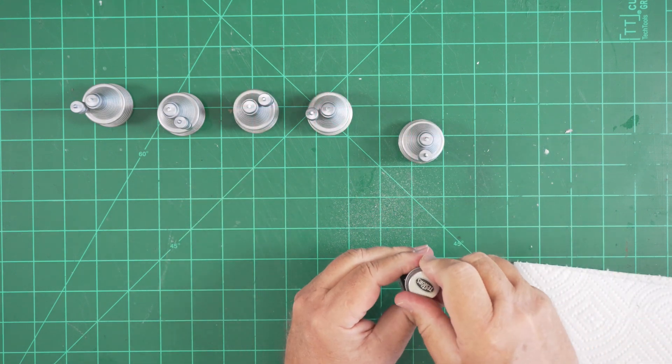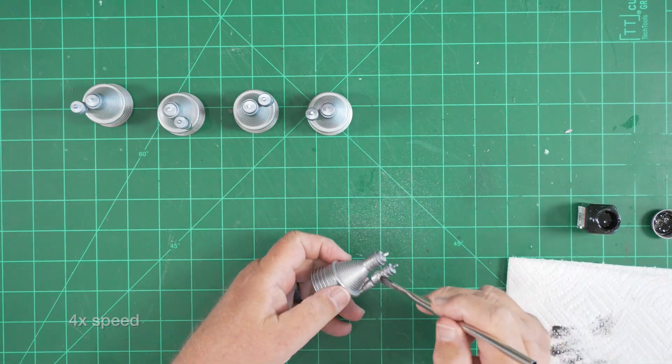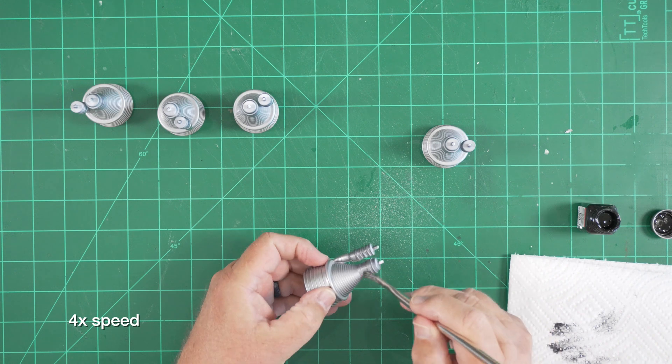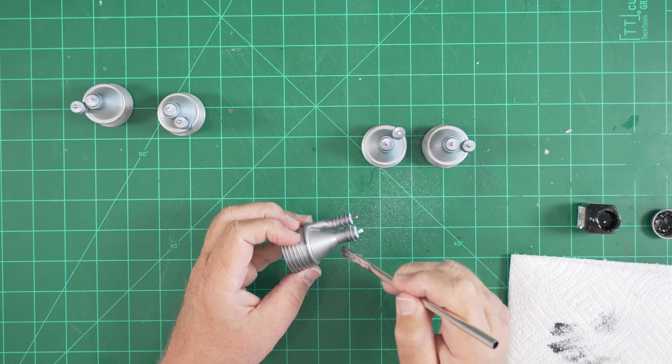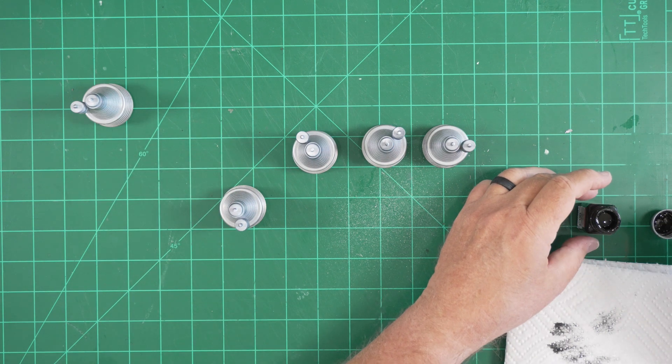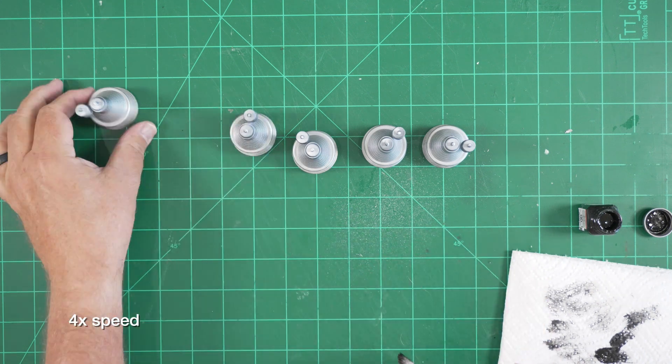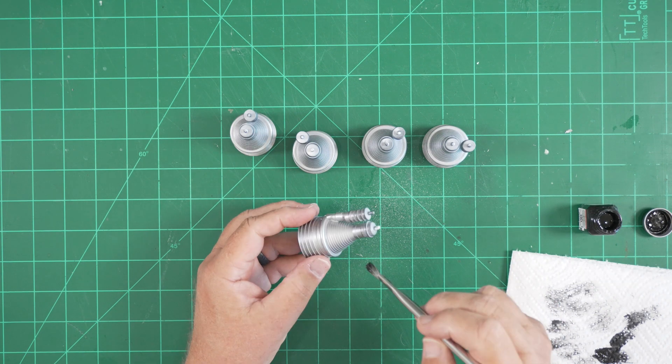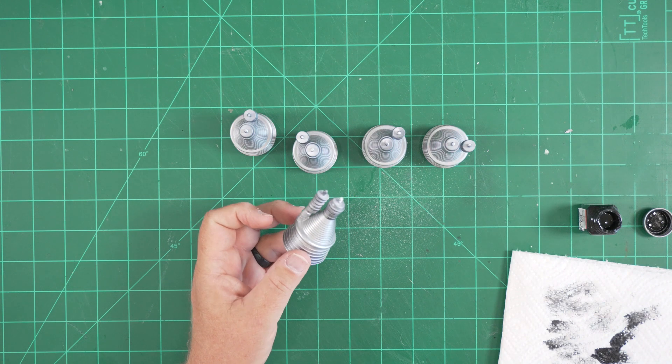We'll repeat that process with some black enamel now. Too little is better than too much. You can always go back and add more. I like the effect with the black a lot. I think I'm going to take it farther down the nozzle. That looks great.